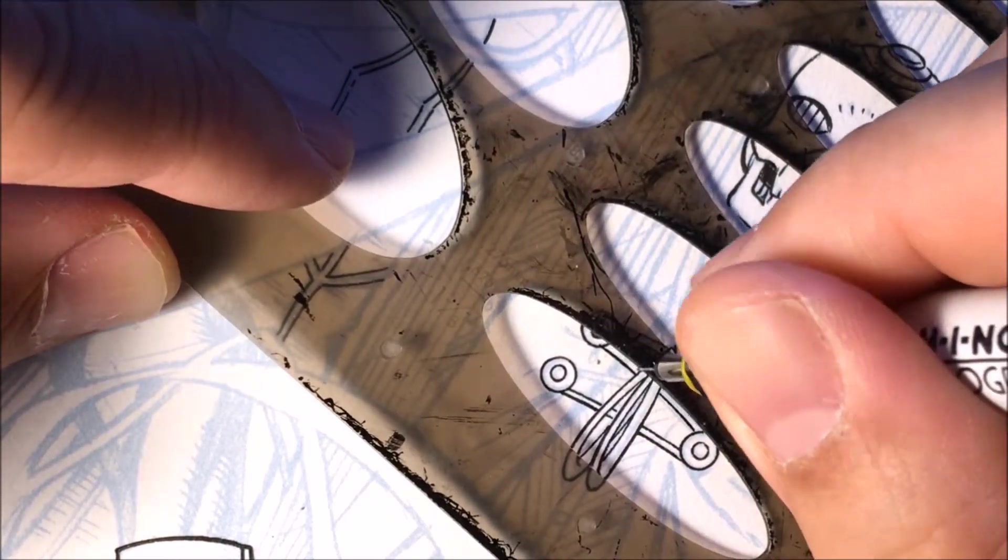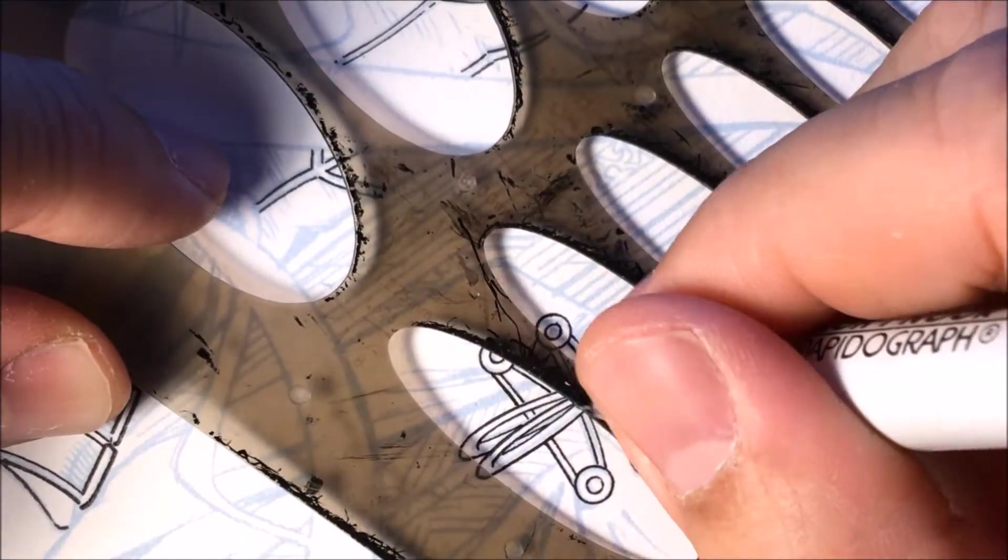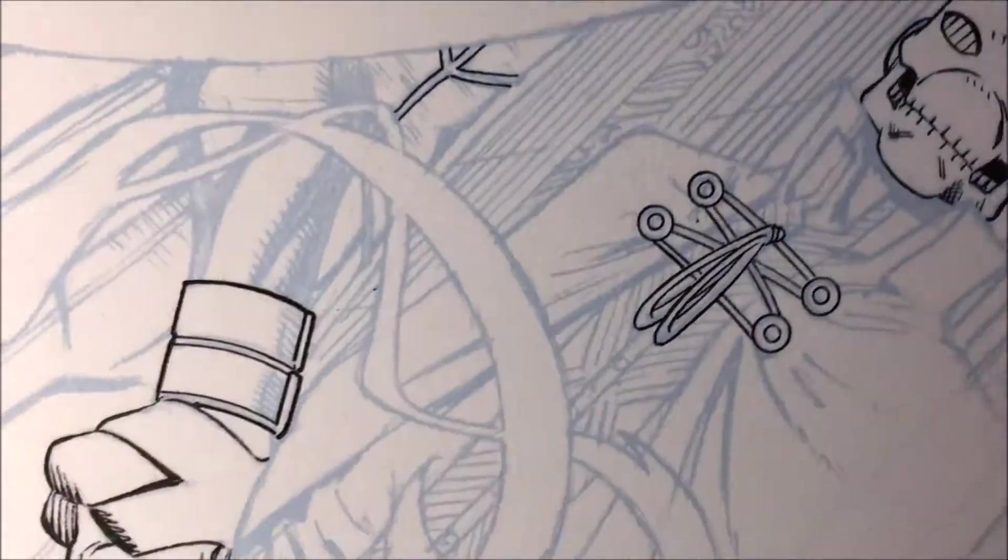Now I'm inking the lines underneath, behind the rope. Again, you want those lines to flow consistently so one line doesn't look higher than the other line flowing underneath.